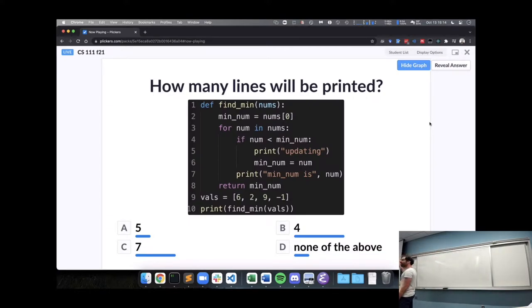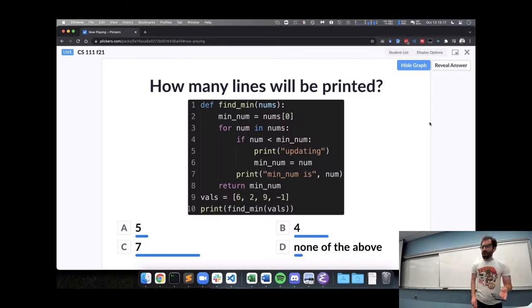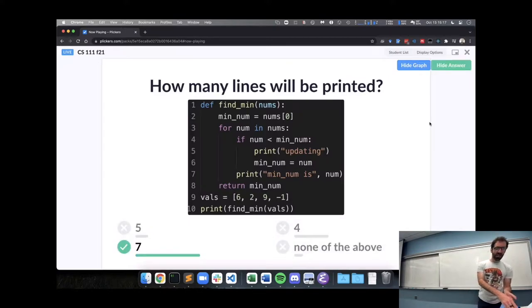Some votes for each one, so please discuss with your neighbors how you're thinking about when these different print statements are going to happen. We've had some movement towards seven, which is in the right direction.